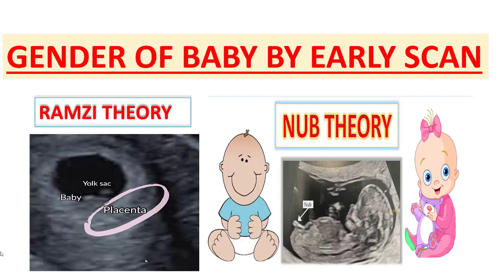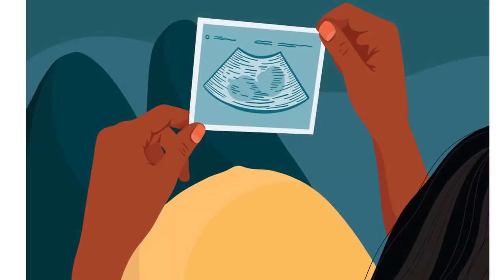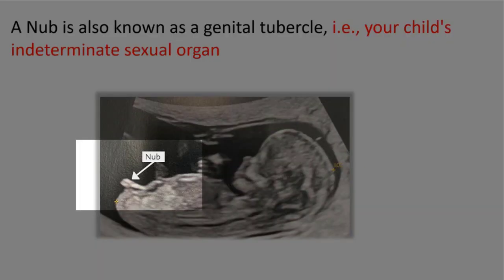Now we will talk about the Nub theory. The Nub theory is based on the hypothesis that you can predict the sex of your baby based on the angle of the genital tubercle. This genital tubercle is also called the Nub, meaning this part of the body of your baby will ultimately develop into the male sex organ or the female sex organ.